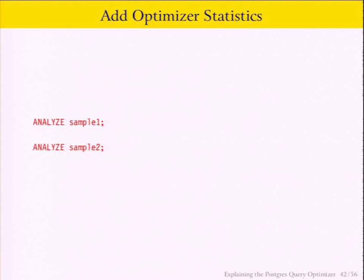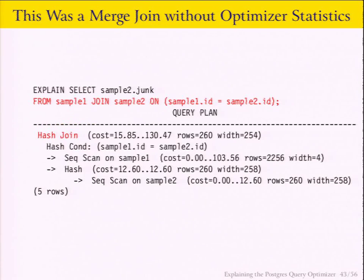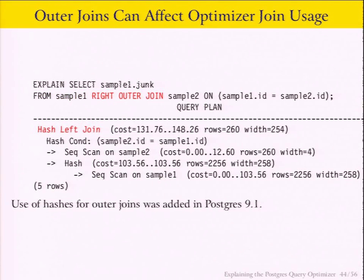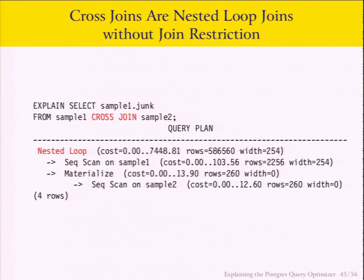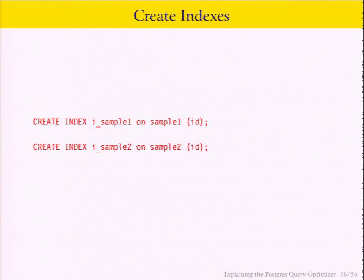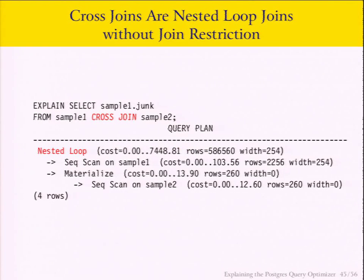Let's give the optimizer statistics — give it a fighting chance to do the right thing. We run ANALYZE on sample_one and sample_two. When I now run the same query that used to be a merge join — the one with no WHERE clause — it now becomes a hash join, because it knows exactly how many rows it's going to get. Even with a right outer join, Postgres is able to do that join correctly. If you do a cross join — joining every row to every other row, a Cartesian product — that has to be a nested loop because every row matches every other row.